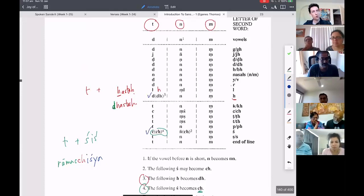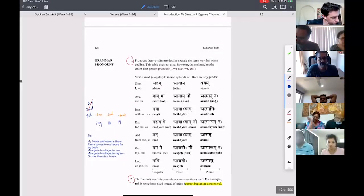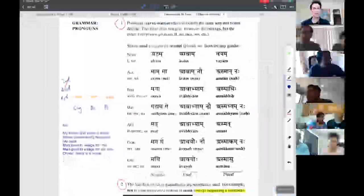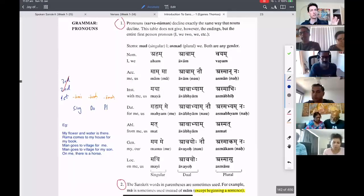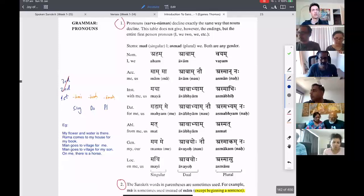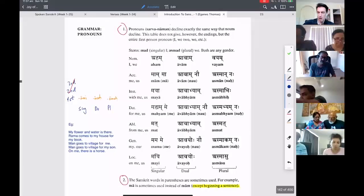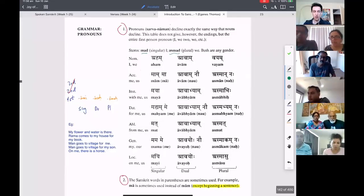And before we finish, let's go through first person pronouns, page 128 of the book. Now instead of saying Gachami, 'I go', you can say finally English - Aham Gachami, the actual word 'I'. For now you don't have to worry about this Mud and Us Mud, this will come later, it will have context.